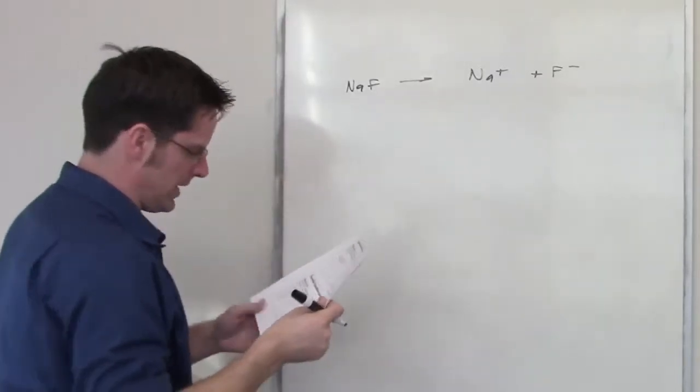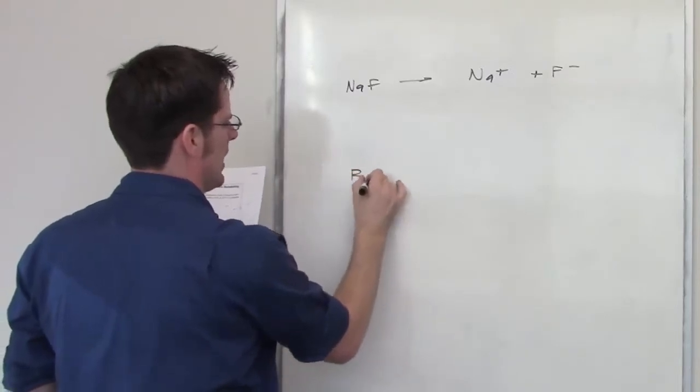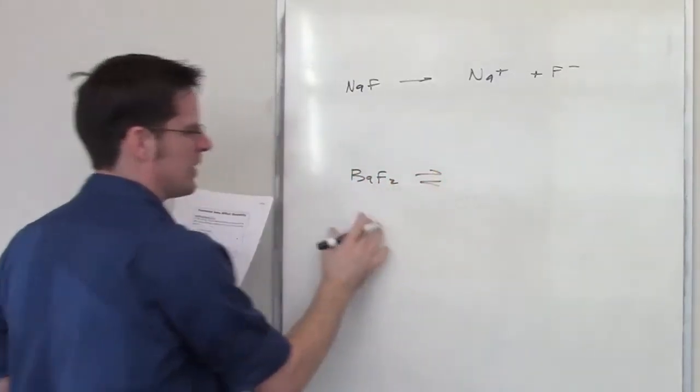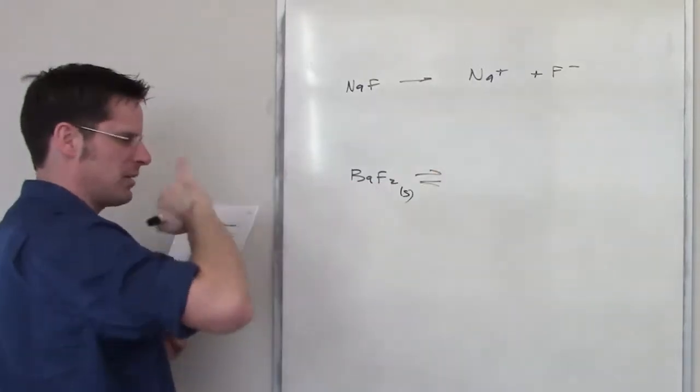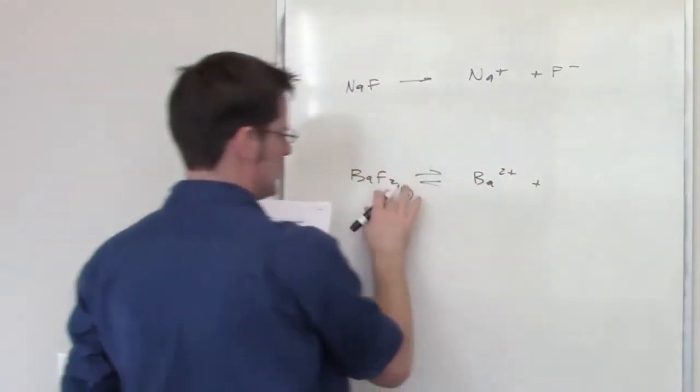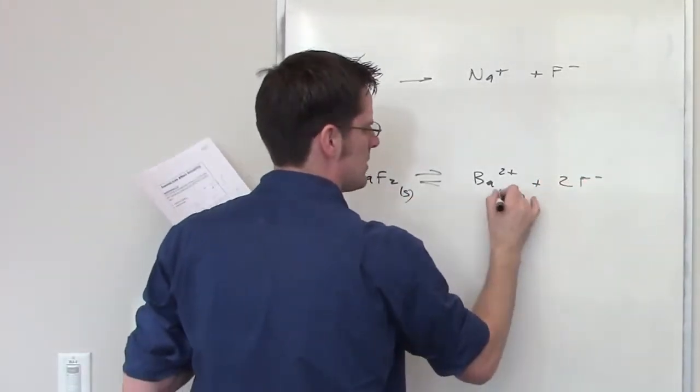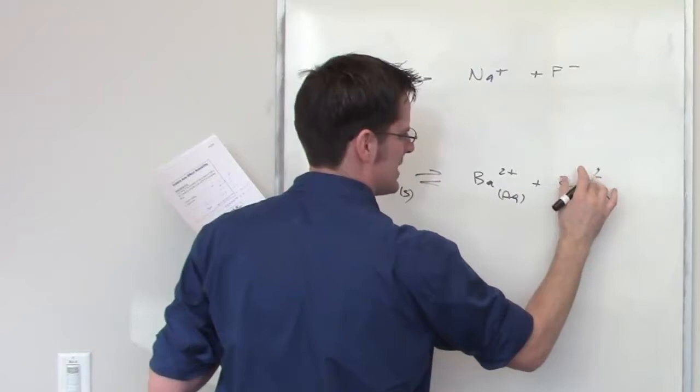I'm adding this dropwise to a solution of barium fluoride. Barium fluoride is not a strong electrolyte, which means it dissociates back and forth in equilibrium to yield barium cation and two molar equivalents of fluoride anion. So this is the setting that I've got.